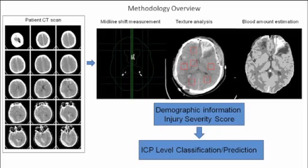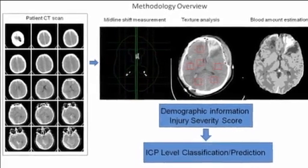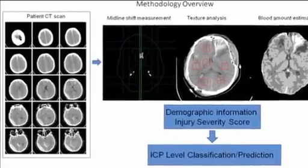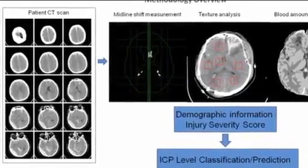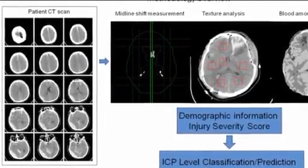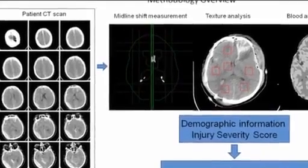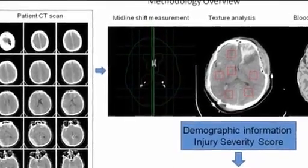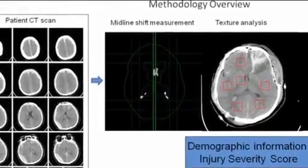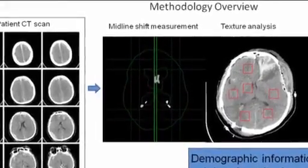This schematic diagram presents the overview of the methodology employed in this research. Computerized axial tomography is more commonly known by its abbreviated names, CT scan or CAT scan. The CT scans are developed from a large series of two-dimensional X-ray images taken around a single axis of rotation. In the first step of our approach, the CT scans of patients with traumatic brain injuries, or TBI, are acquired and analyzed to detect the midline shift.